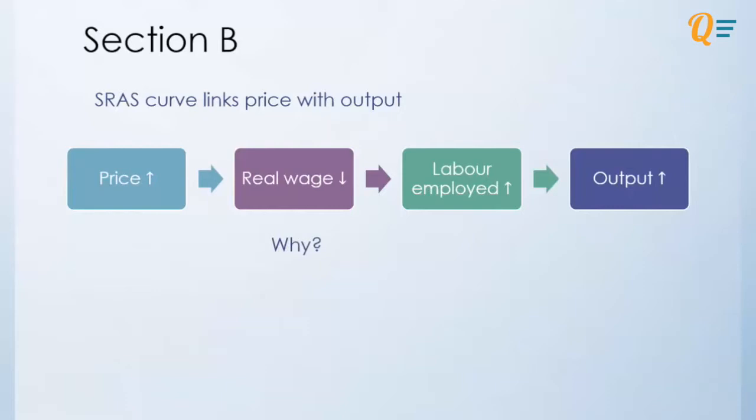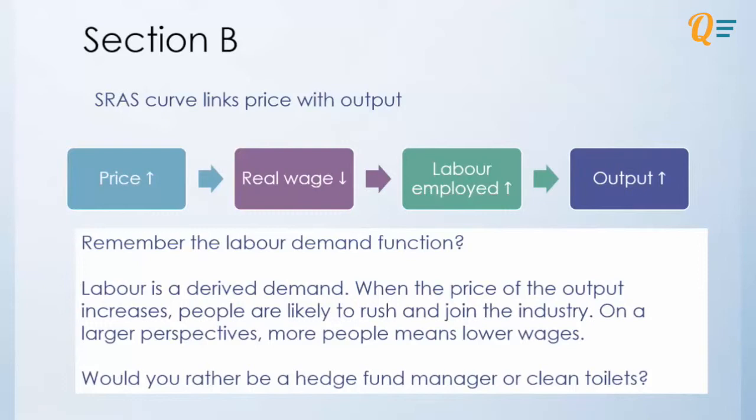Okay, second thing is why will real wage decrease? So remember labor demand is a derived demand for the output itself. So when price of the output increases, people will want to go into that industry. So when more people come into this particular industry, definitely your wages will fall.